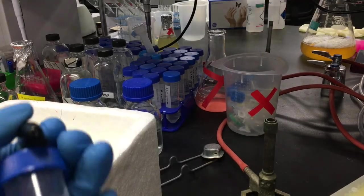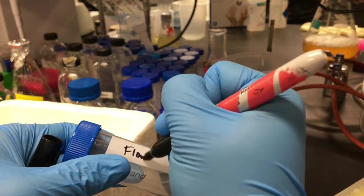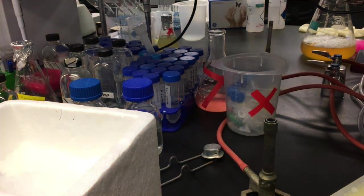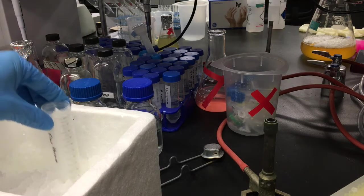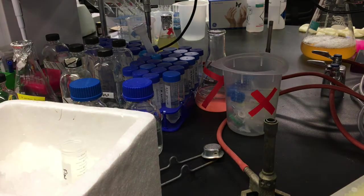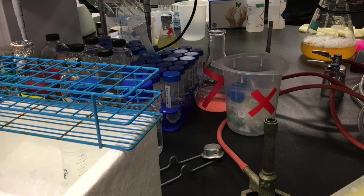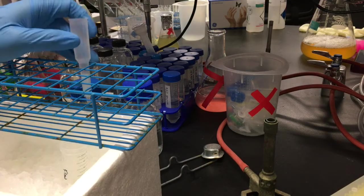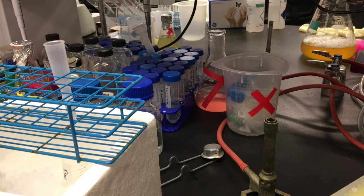Now, I can pass the soluble cleared lysate through the column, making sure to collect the flow through, which I will analyze by SDS-PAGE later on. The column only has a 10 milliliter capacity, so I will probably need to pass the cleared lysate through in more than one batch.